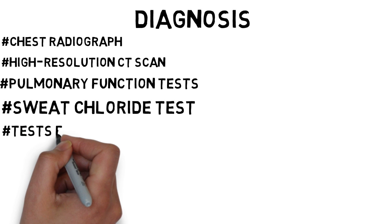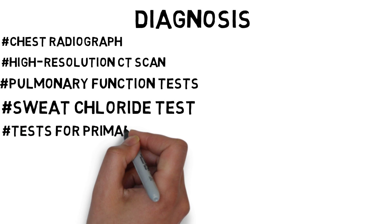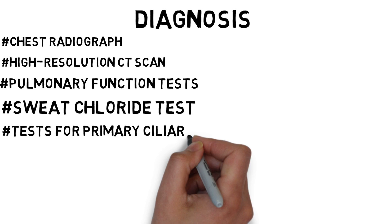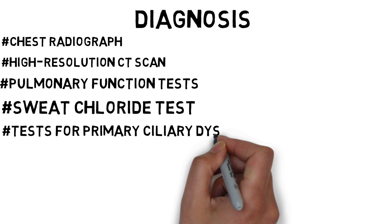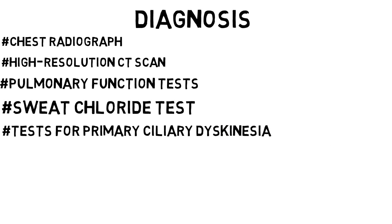Testing for primary ciliary dyskinesia: measurement of nitric oxide levels in the exhaled breath condensate may be useful for screening. Levels below 250 ppb are suggestive of PCD, but can occur in other diseases as well. Definitive testing for PCD requires measurement of ciliary beat frequency, usually by high-speed digital video photography, using biopsy samples taken from nasal and tracheal epithelium.